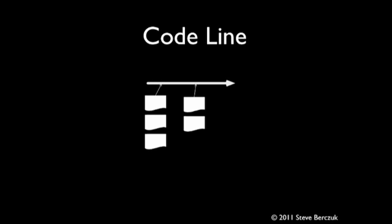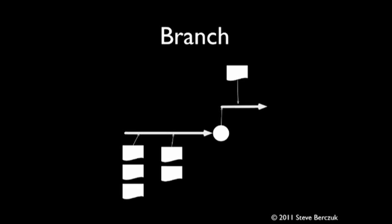Not every team can maintain this discipline, and even for those who can, there are legitimate reasons to work on more than one code line. Once developers realize the challenges of working on a single code line, they quickly become interested in the way a tool supports branching. The first question people often ask about a tool is how it supports branching, and that question is best answered in the context of understanding why you want to branch.